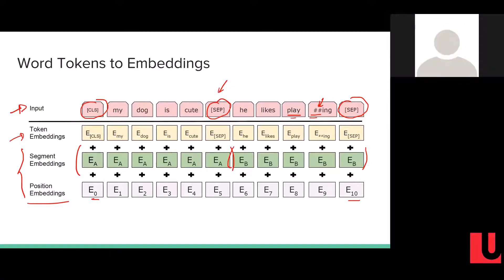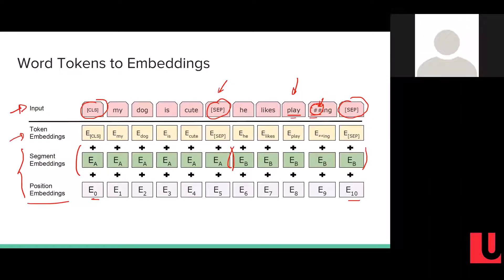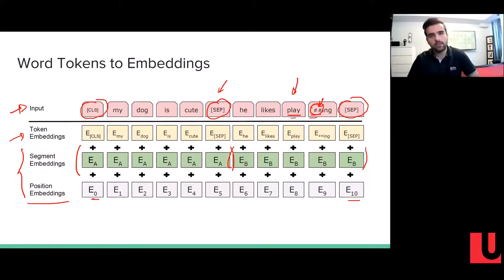Audience question: What if a word is outside the 30,000-word vocabulary? The answer is similar to the subword situation explained earlier — for example, 'play' is part of the vocabulary but 'playing' is not. The special hash symbol marks subword tokens that fall outside the vocabulary as subsequent subword pieces.